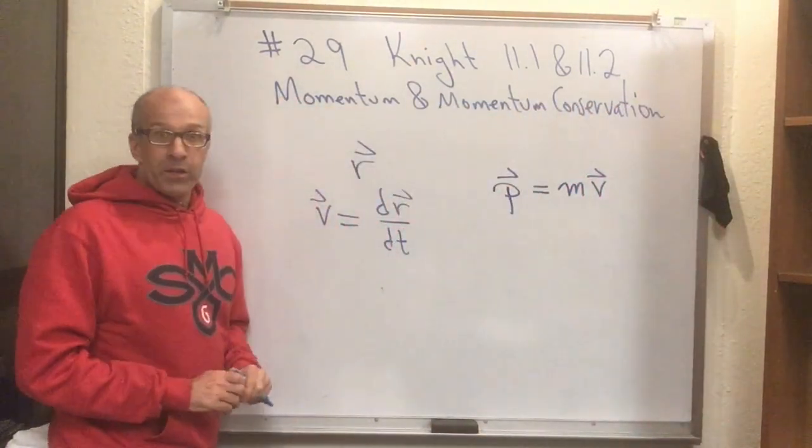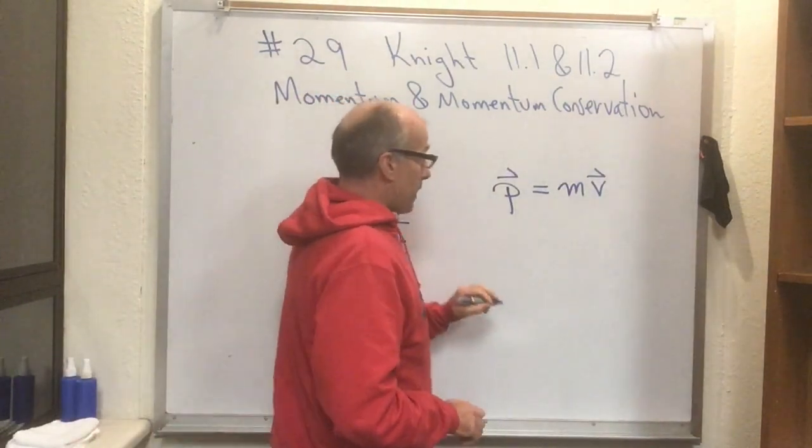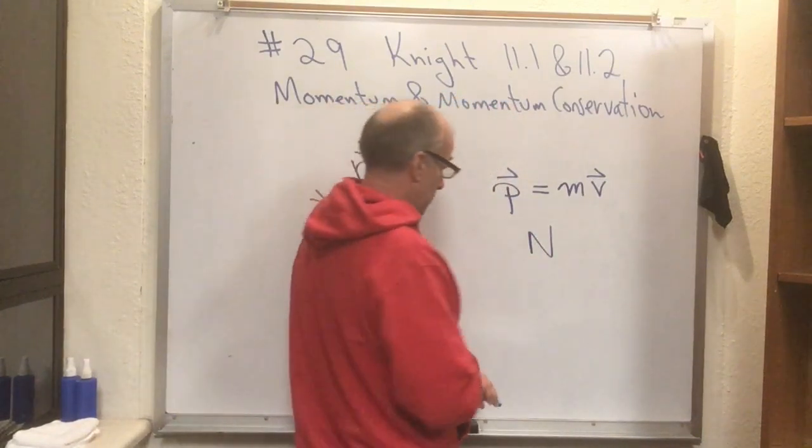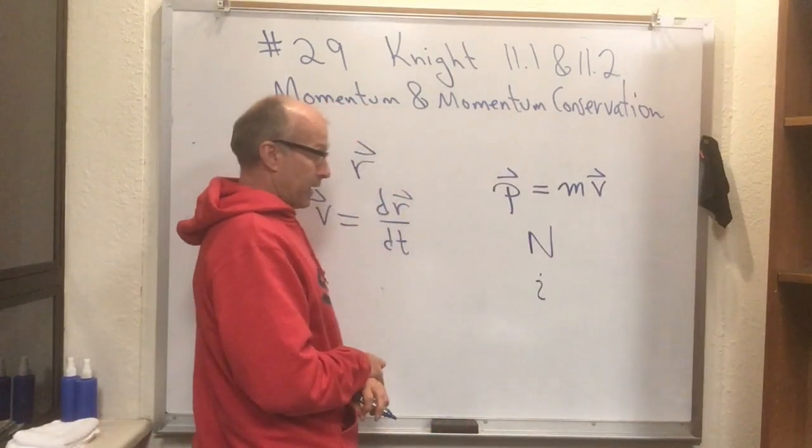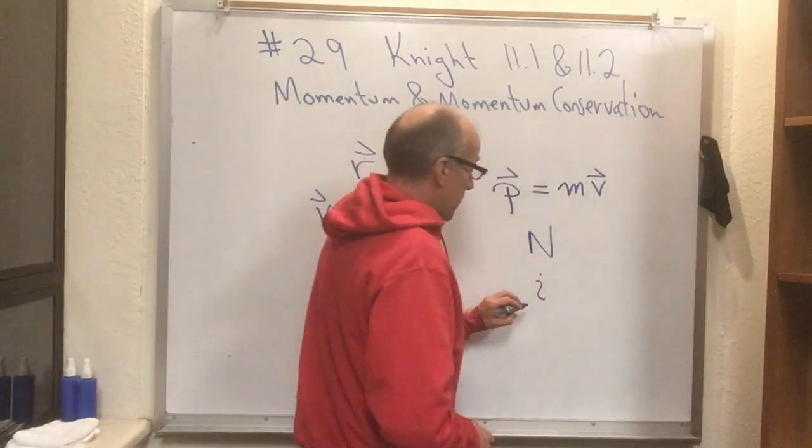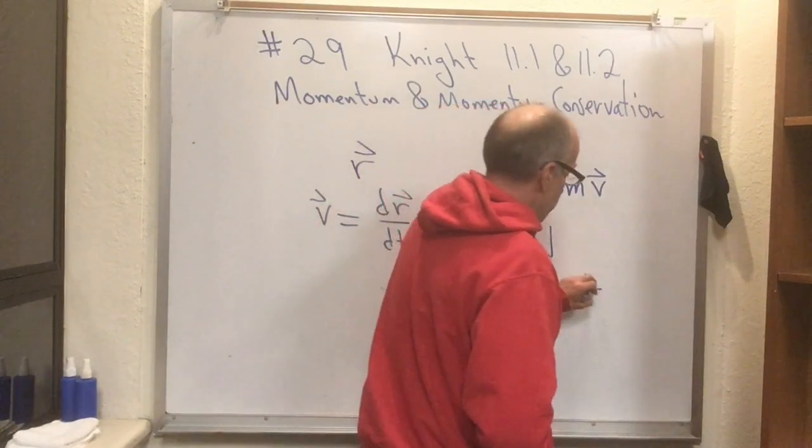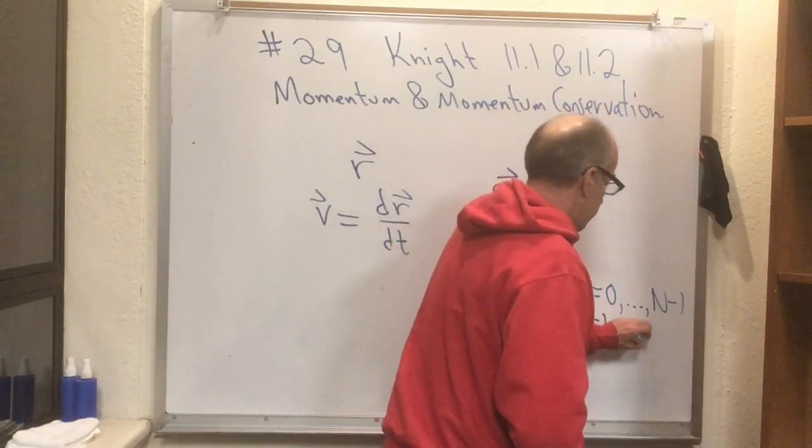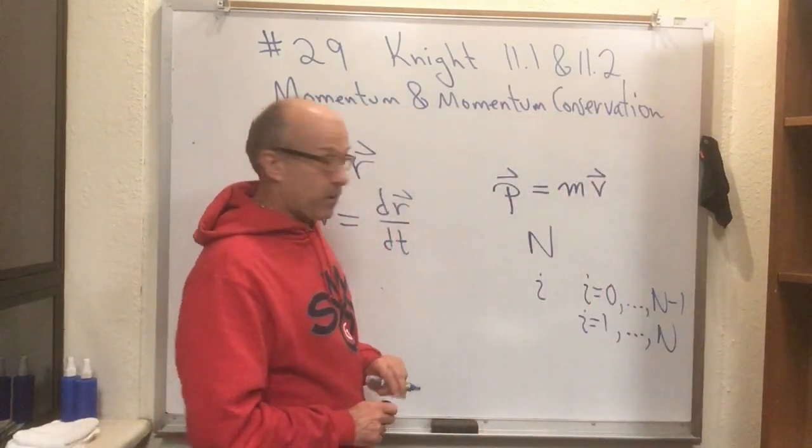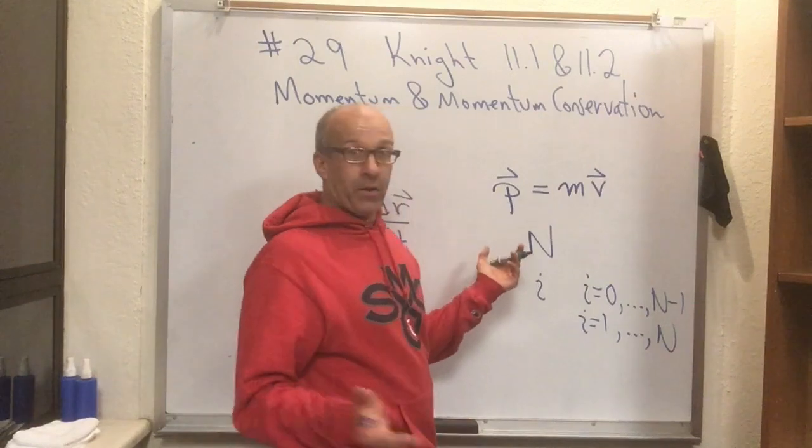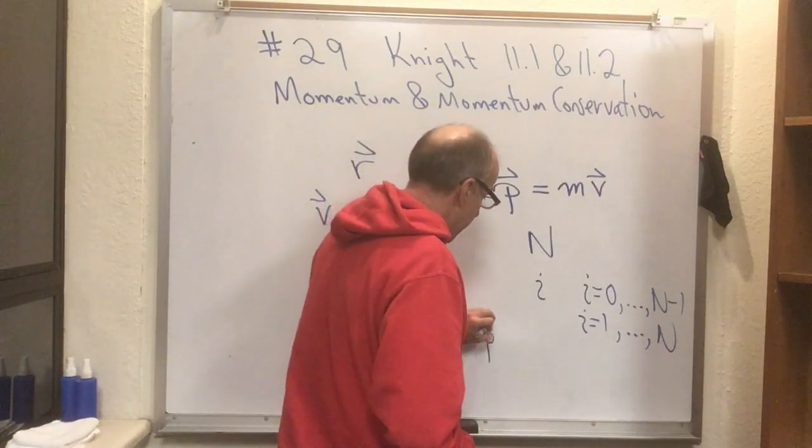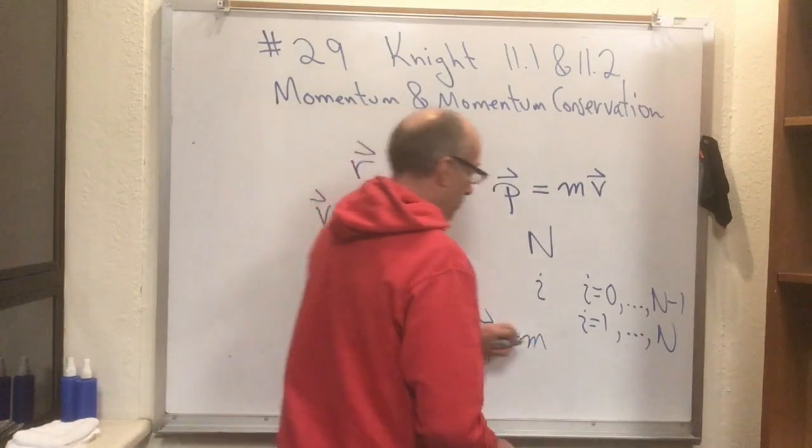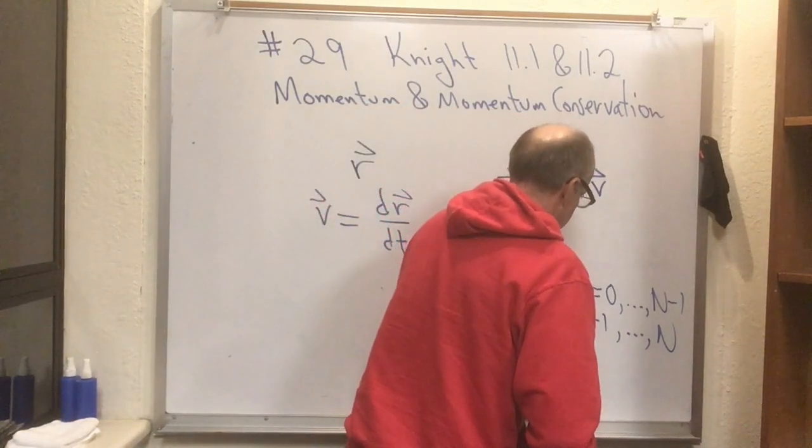Now, if you have a whole bunch of different particles in a system, and they were labeled by some index, maybe you have capital N particles in your system. And you label them by some index i. Maybe you let i run from 0 to n minus 1 if you're a programmer. Or if you count like normal people do, maybe you let i run from 1 to n. Anyway, however you index your particles, you can define for each particle in the system a momentum. And of course, p sub i, the momentum of the i-th particle, is the mass of the i-th particle times the velocity of the i-th particle.